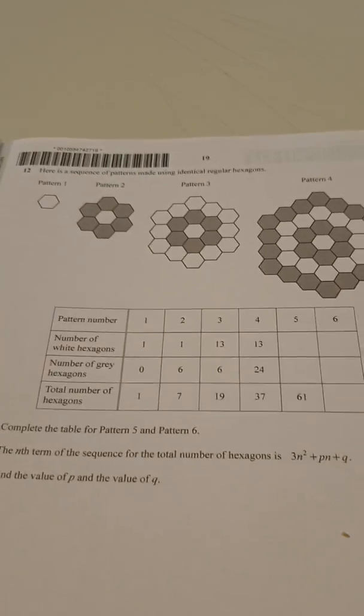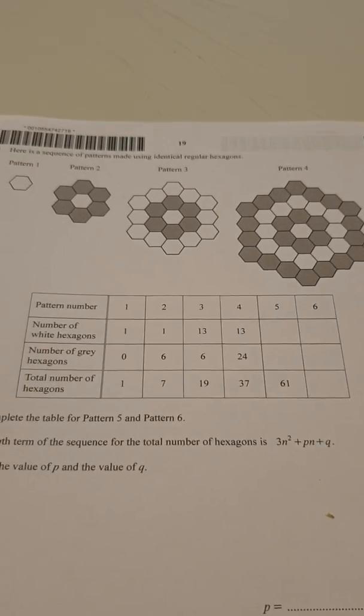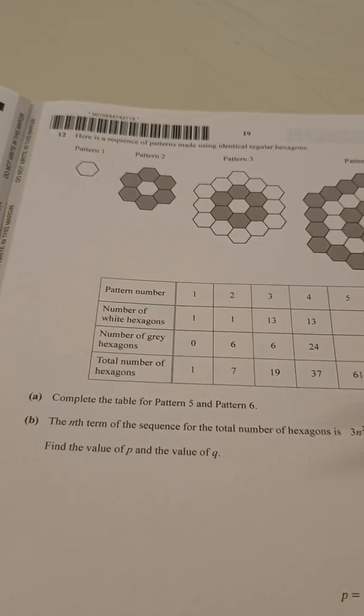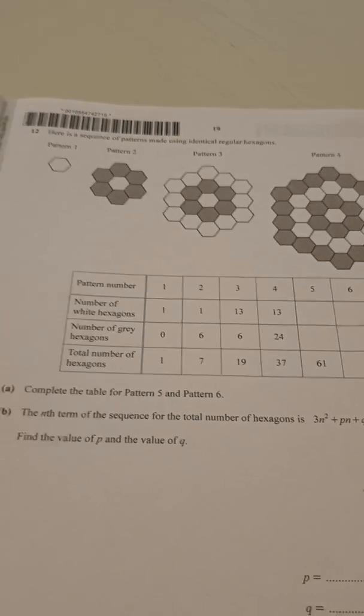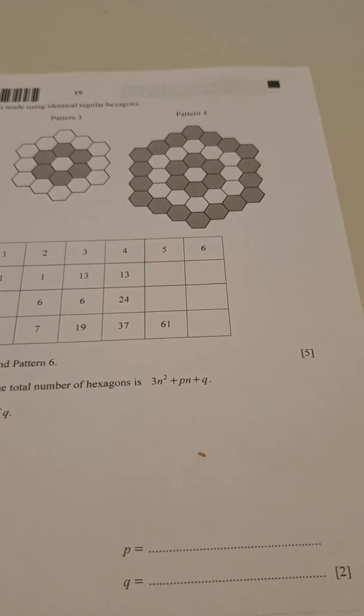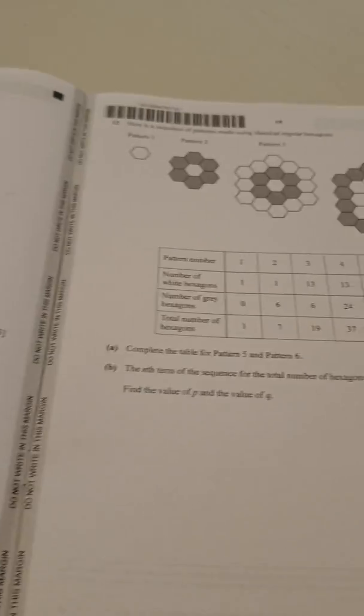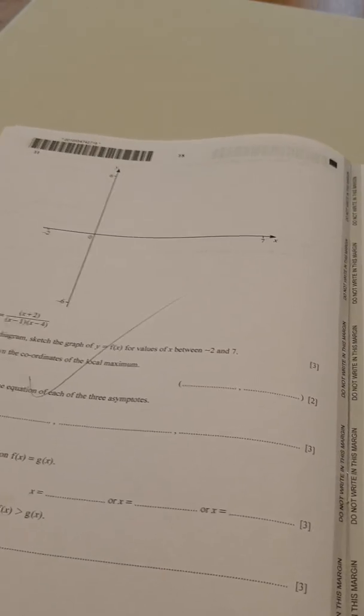And we have a question very like last year, which is an nth term question. Certainly finding the patterns isn't too difficult. If you get really stuck you can just draw it out, if you don't see the pattern straight away. It's worth drawing pattern five at the very least, just to see what's going on. And then a quadratic nth term question, which was also predicted. So big tick for that one there. And that was the end of the paper.